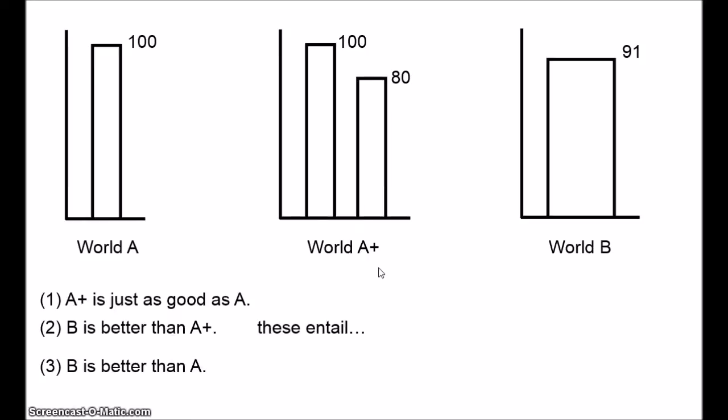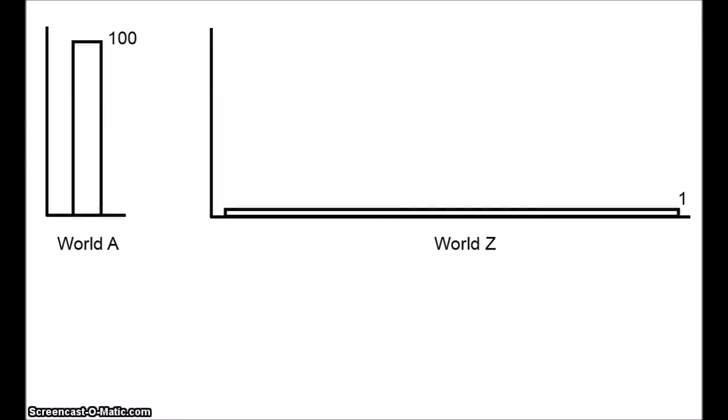Okay, so it should be kind of obvious what the problem here might be. We can apply the same kind of argument to world B that we applied to world A, leading to a world C with 4 million people whose lives have a value of, say, 75. And C is better than B, therefore C is better than A. And we can repeat this until we get to world Z. And this contains billions and billions and billions and billions of people whose lives are barely worth living. And we end up with the conclusion that Z, a world full of people whose lives are barely worth living, is better than A. And this is what Parfit finds repugnant. This is the repugnant conclusion.